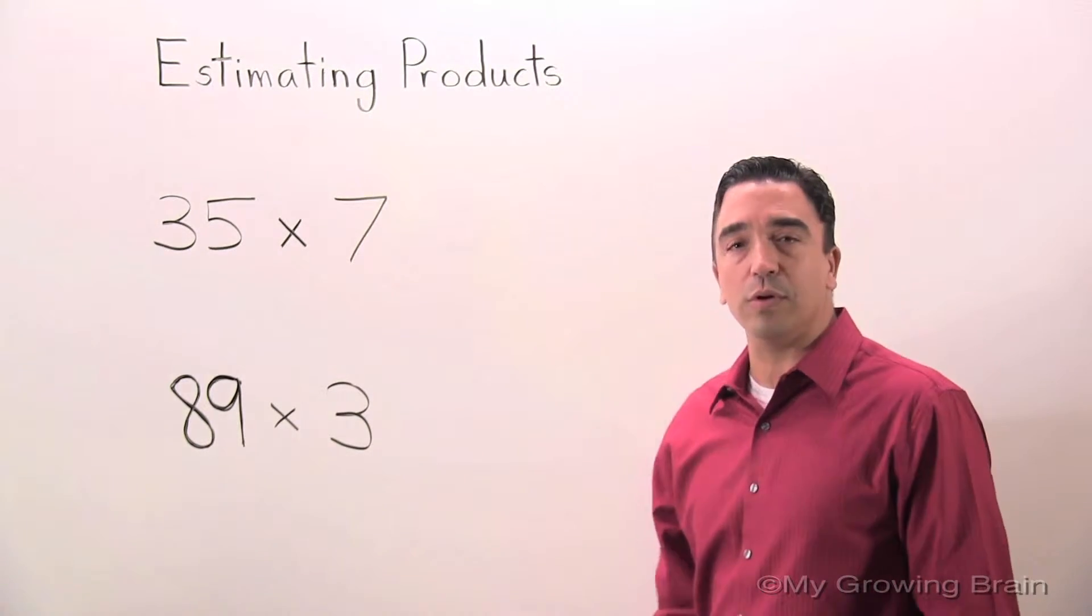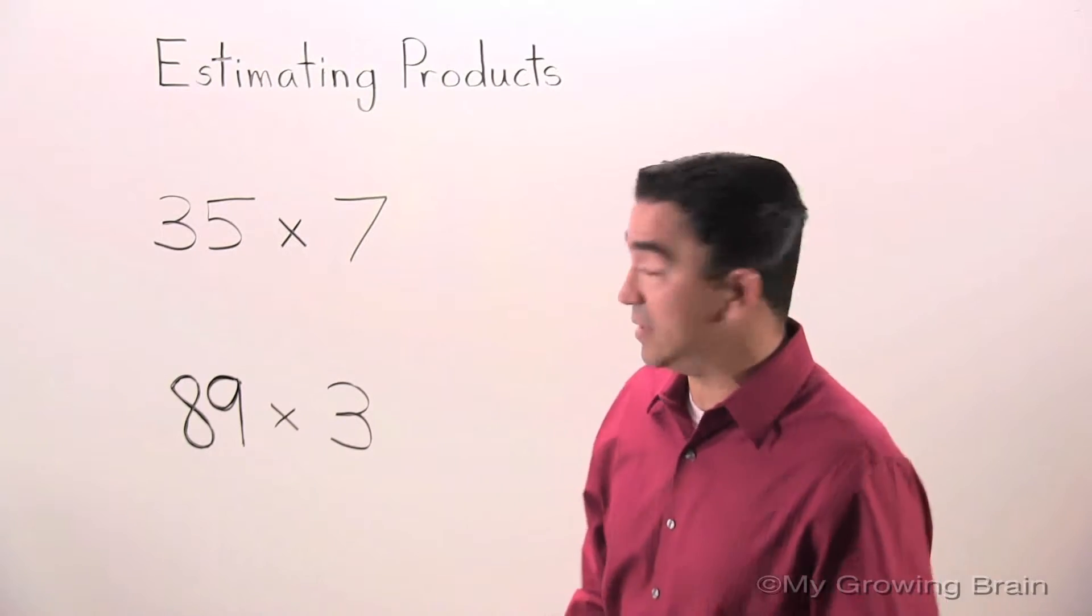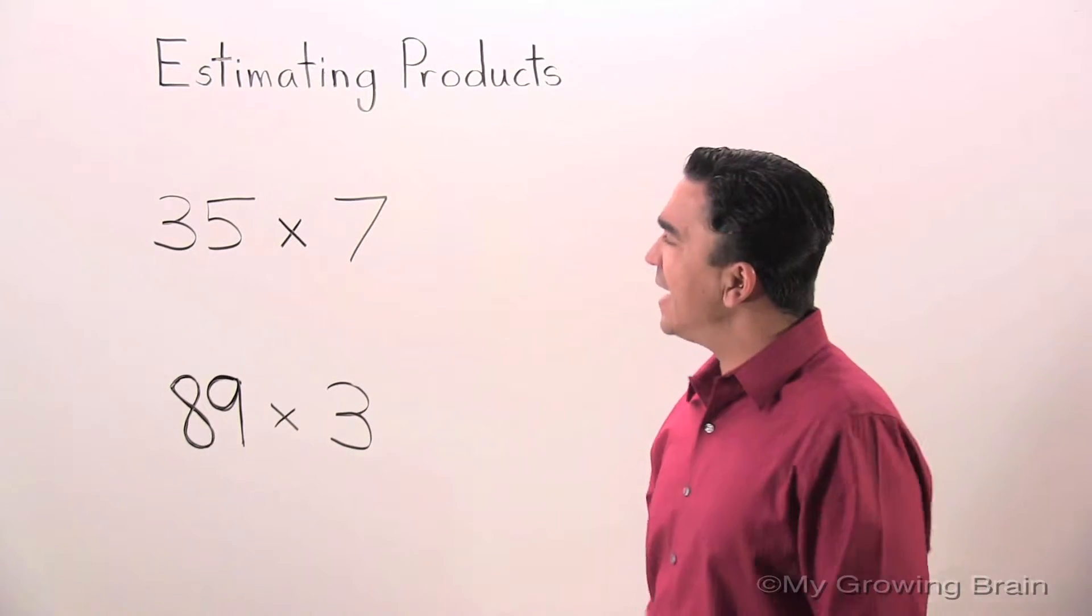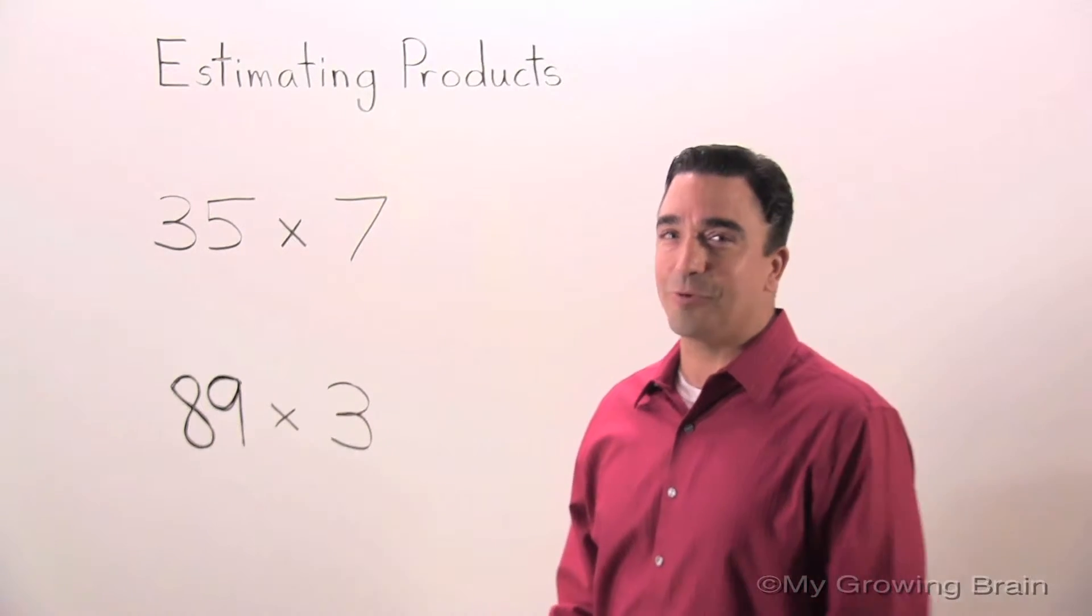I have two problems on the board. We're going to start with 35 times 7. I want to find an estimate. An estimate is an answer that is close to the actual answer.